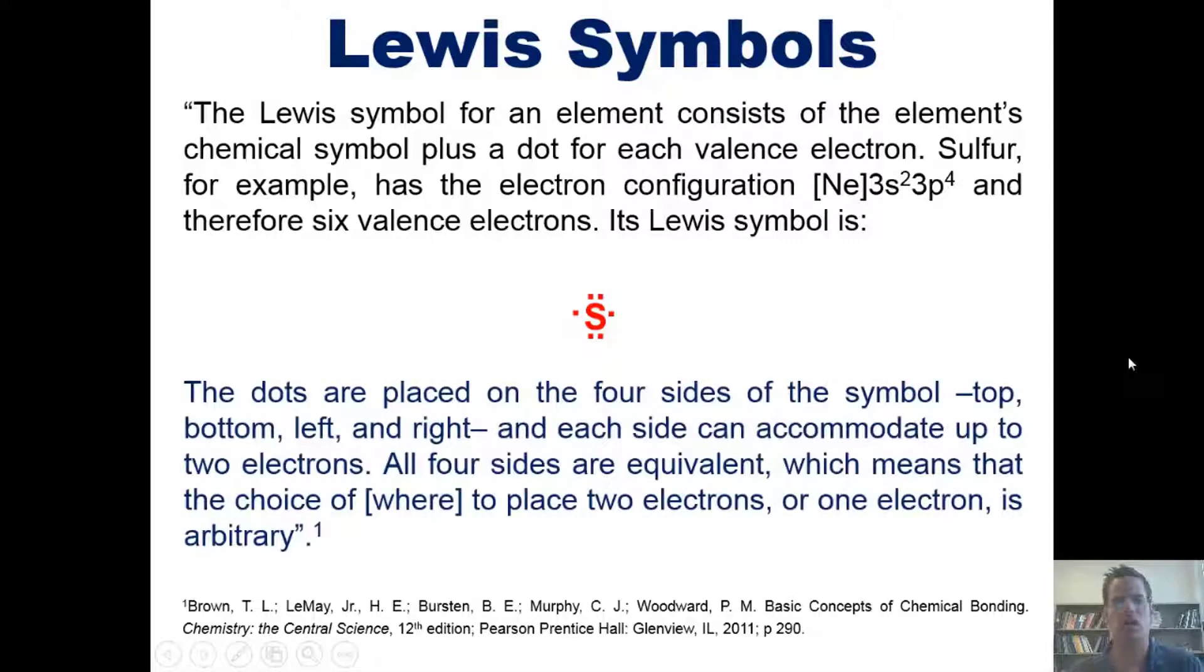So the dots are placed on four sides of the symbol, top, bottom, left, and right, and each side can accommodate up to two electrons. All four sides are equivalent, which means the choice of where to place the two electrons, or one electron if you have an unpaired one, is completely arbitrary.